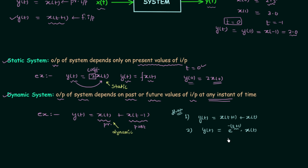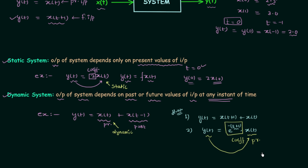You need to understand that e^(−(t+1)) is a coefficient, not the input — just like 2 was a coefficient in the earlier example. You don't need to worry about any coefficient, even if it contains t. You only need to focus on the input, which is x(t). Since x(t) is the present value of input, and y(t) depends only on x(t), this system is static in nature.